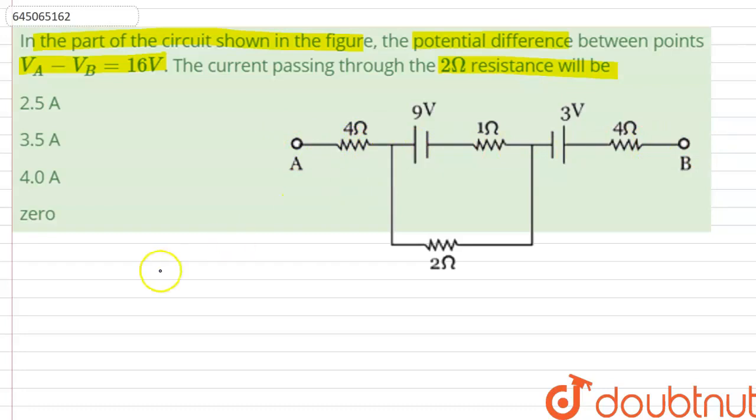Applying KVL, we can write that Va minus 4 times I, where we assume that current flowing in this direction is I and the current flowing here is I minus I1 and the current flowing in this branch is I1.